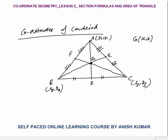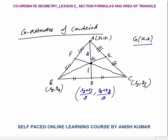Next, can we find the coordinates of the centroid using the concepts we just discussed? For a triangle ABC with vertices (X1,Y1), (X2,Y2), and (X3,Y3), G is the centroid. Point D is the midpoint of BC, so the coordinates of D are (X₂+X₃)/2, (Y₂+Y₃)/2. The centroid G divides the median AD in the ratio 2 is to 1. Using the internal division concept, we can find the coordinates of centroid G.